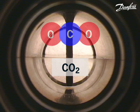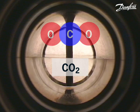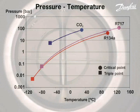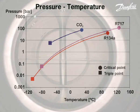The video shows the different phases of CO2 and how two of the phase changes occur by altering either the pressure or the temperature. When compared with commonly used refrigerants R134A and R717, CO2 has some unique characteristics. It operates at a much higher pressure but across a narrower temperature range than both R134A and R717.